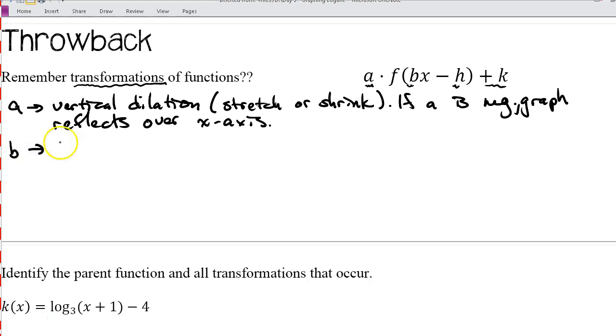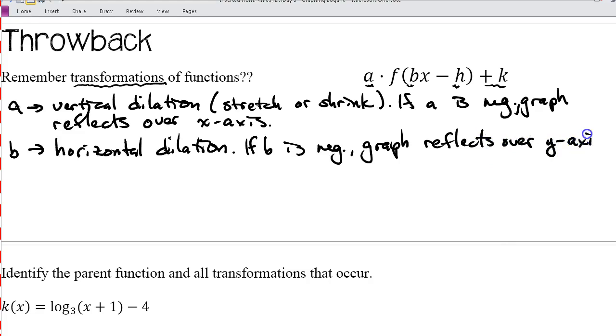this is a horizontal dilation. And again, if b is negative, the graph reflects over the y-axis. So instead of stretching in a vertical direction, we're stretching in a horizontal direction, left or right.